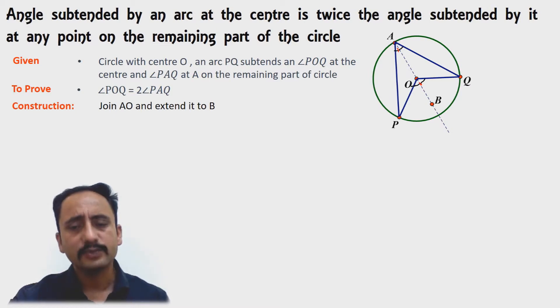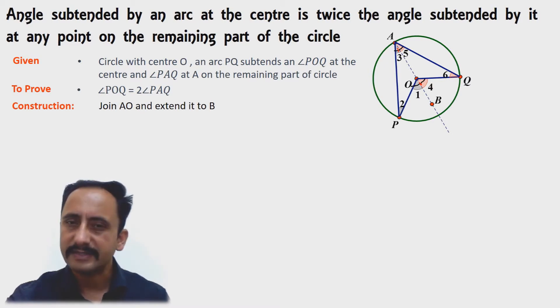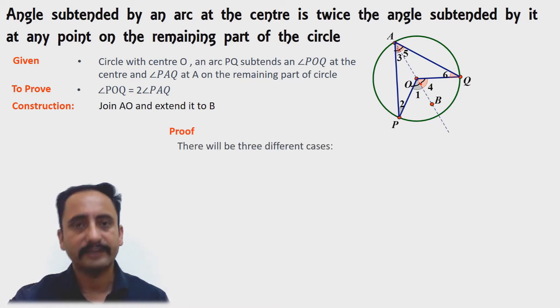All the angles which I have obtained I will mark as angle 1, 2, 3, 4, 5, up to 6. I will be using this numbering for the proof of the theorem, and there will be three different cases.